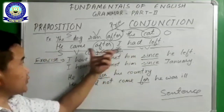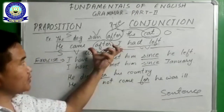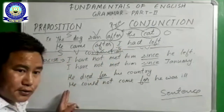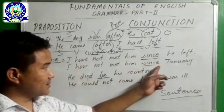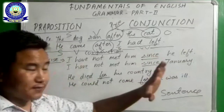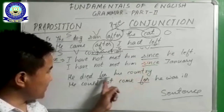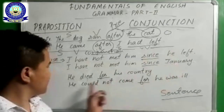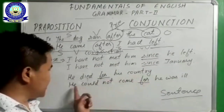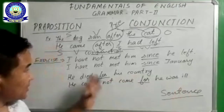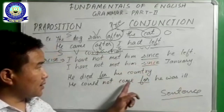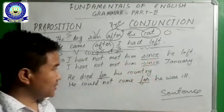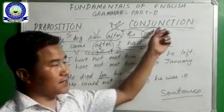Because the work of conjunction is to join the sentence or join the clause. Now I will leave here four sentences for you to exercise. 'Since' and 'for' have worked in different concepts — 'I have not met him since he left,' 'I have not met him since January,' 'He died for his country,' and 'He could not come for he was ill.' I want you to find out in what concept these underlined words are working — whether they are working as preposition or as conjunction.